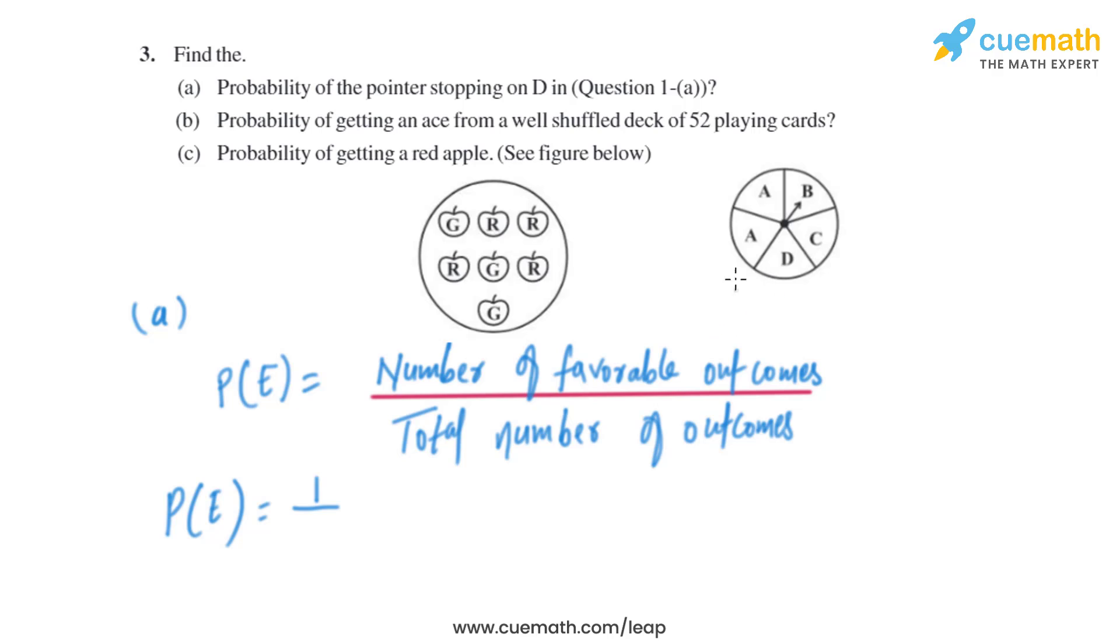Counting the sections: 1, 2, 3, 4, 5. So the total number of outcomes is 5. Therefore, the probability is 1 over 5. Now let's look at part (b).